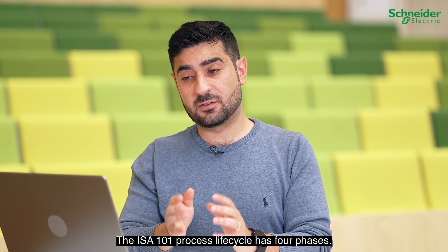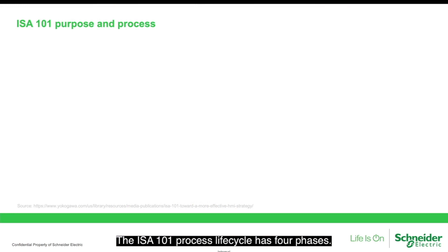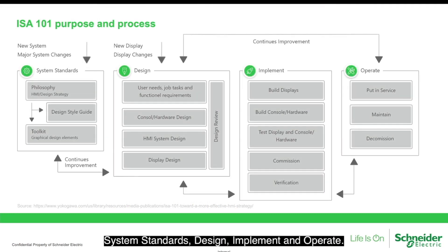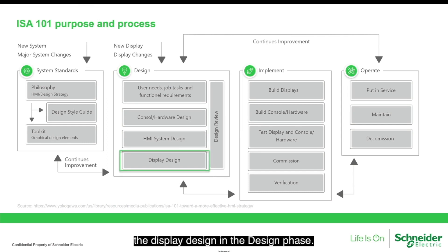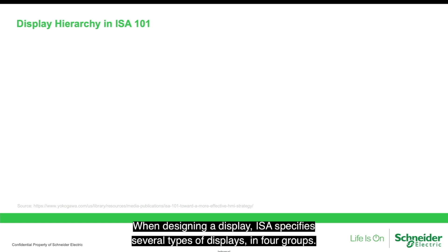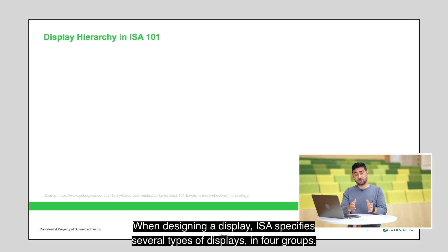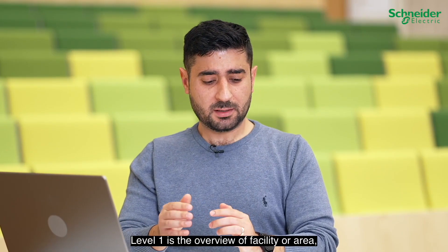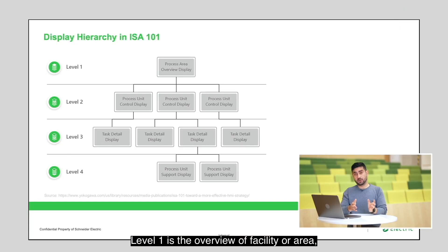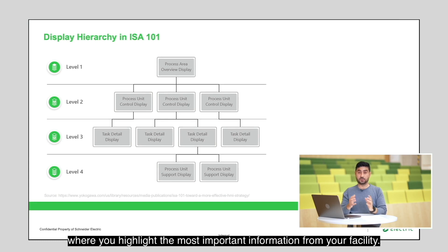The ISO 101 process lifecycle has four phases: system standards, design, implement, and operate. For the purpose of this video, we will be focusing on the display design in the design phase. When designing a display, ISA specifies several types of displays in four groups. Level one is an overview of the facility or area, where you highlight the most important information from your facility.